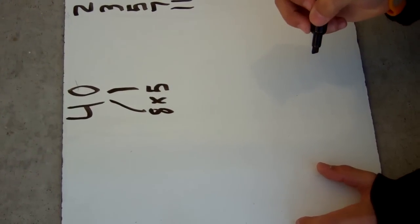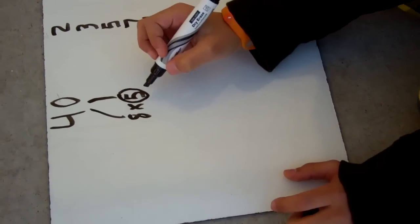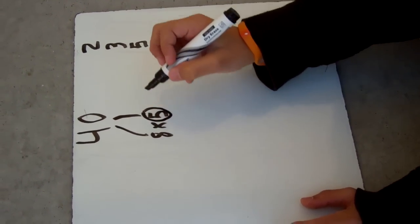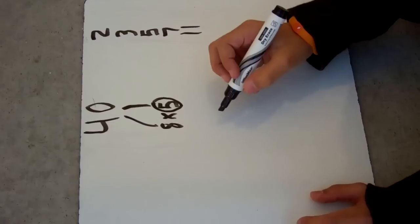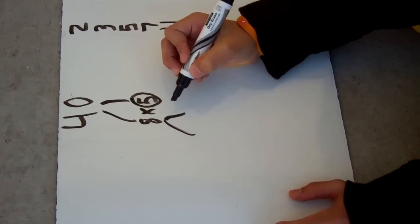Are either of those prime numbers? Yes. So we circle the 5, and this is a prime number, so we don't draw branches off of it. This is not a prime number, so we draw branches.